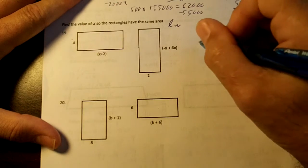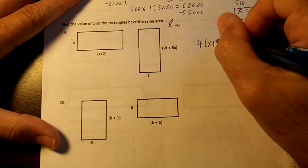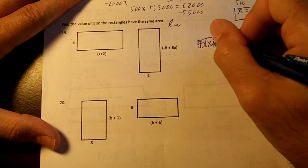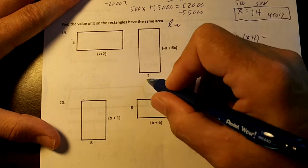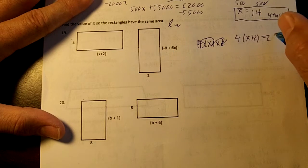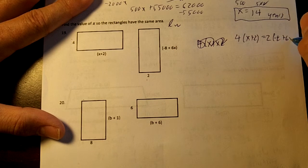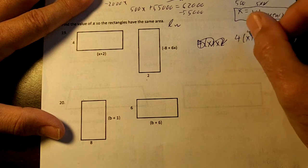So 4 times x plus 2. 4 times x plus 2 equals 2 times, make sure you get your sign right, negative 8 plus 6x. So we're going to distribute.